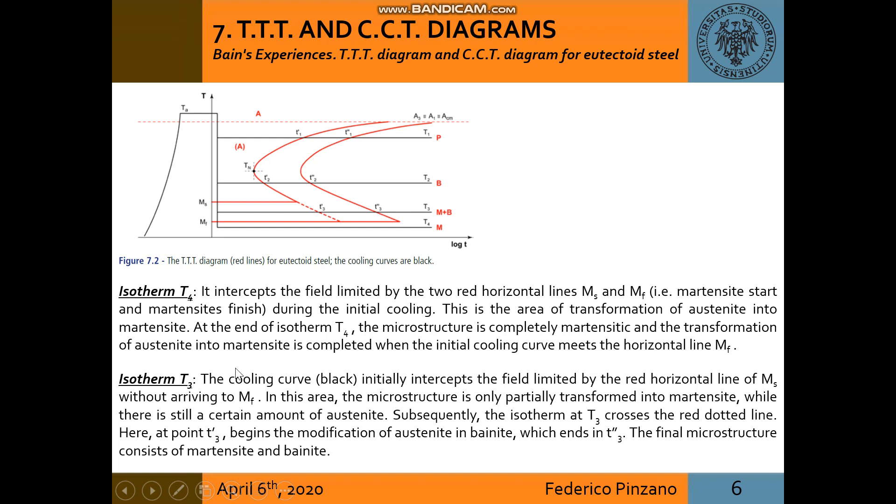Isotherm T3: The cooling curve initially interrupts the field limited by the red horizontal line of MS without arriving at MF. In this area, the microstructure is only partially transformed into martensite, while there is still a certain amount of austenite. Subsequently, the isotherm T3 crosses the red dotted line. Here, at point T3 first begins the modification of austenite into bainite, which ends at T3 second. The final microstructure consists of martensite and bainite.